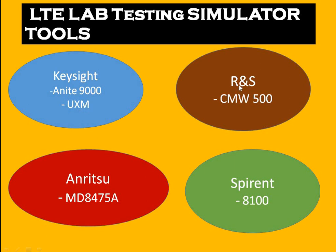The second company is R&S. R&S has a very famous product called CMW 500. This is similar to UXM and incorporates some features of Anite as well. With the help of this tool you can create scripting and perform various scenarios like handover, cell selection, reselection, inter-RAT handover, and camping procedures.